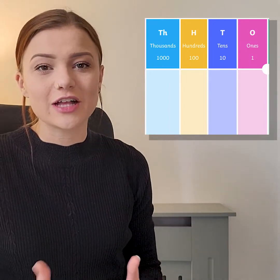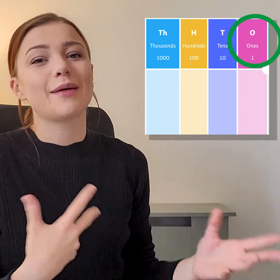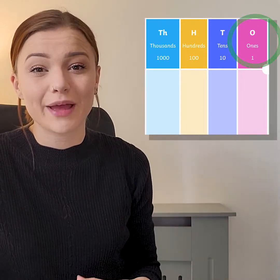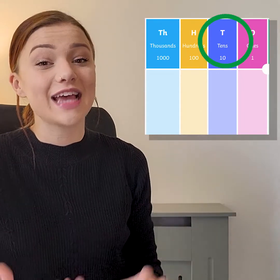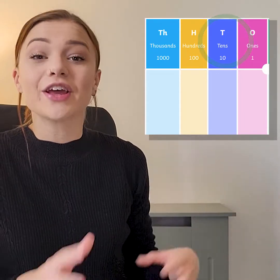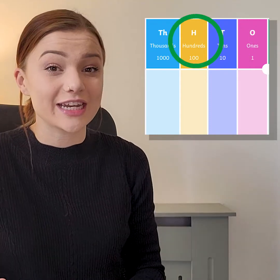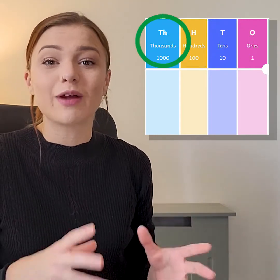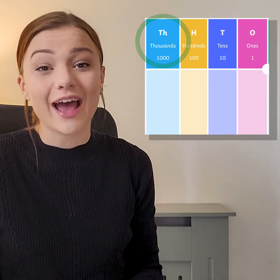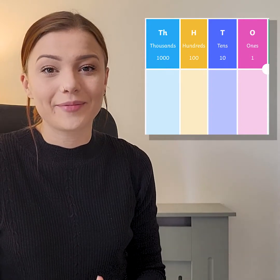On our place value chart, we know that the ones column represents how many ones are in a number, the tens column represents how many tens, the hundreds column represents how many hundreds, and the thousands column represents how many thousands in a given number.